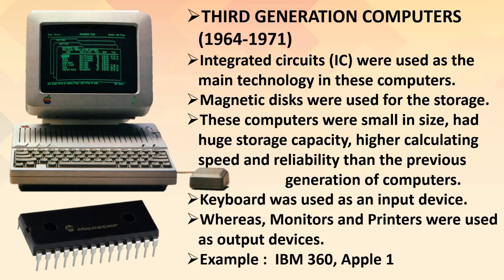Third generation computers: 1964–1971. In this generation, computers used integrated circuits. Magnetic disks were used for storage. These computers were small in size with higher storage capacity, higher calculating speed and greater reliability than previous generations. Keyboard was used as an input device and monitors and printers were used as output devices. Examples: IBM 360 and Apple One.